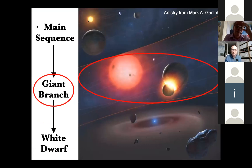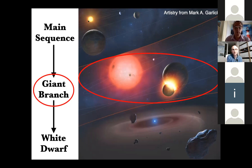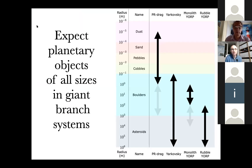The focus of my talk is on planetary systems around giant branch stars, which affect the distribution of dust. I would argue that around giant branch stars, this is the most violent period of a planetary system's life. It also represents the intermediate phases and can be thought of as the transition between the relatively quiescent main sequence and white dwarf phases. Crucially, in the giant branch stellar phases, we expect there to be planetary objects of all sizes, including not just dust, sand, and pebbles, but also boulders and minor planets, as well as larger planets.